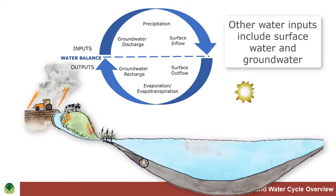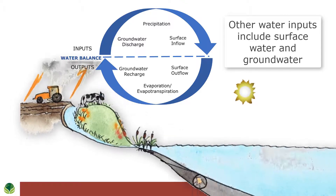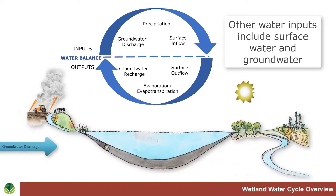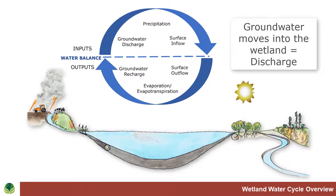The plants take up water from the soil with their root systems and then move it up into the atmosphere. Water can come in not only as surface flow, but as groundwater moving laterally or moving vertically. When groundwater moves vertically in an upward direction, it's called groundwater discharge.